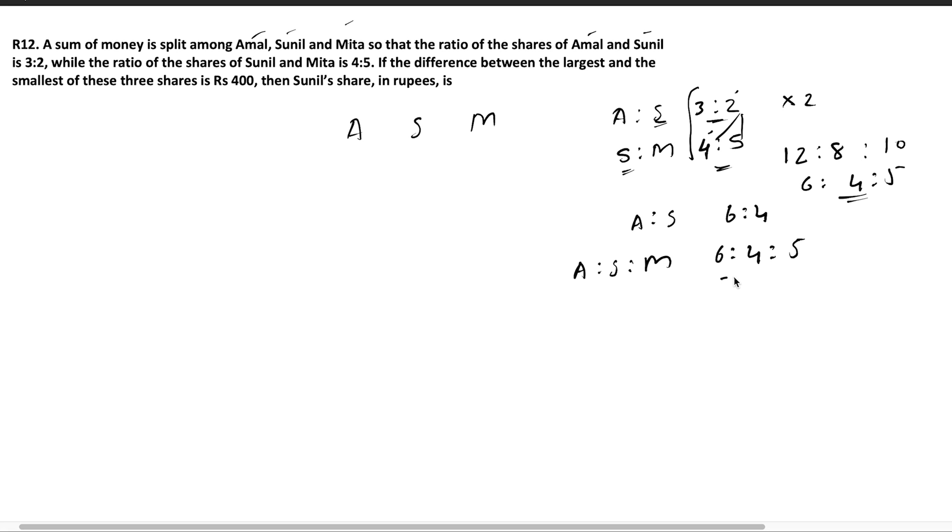So now you have got the ratio between A, S, M. Let's look at the rest of the question. If the difference between the largest and smallest of these three shares is Rs 400, then Sunil's share is. So let's take the sum of money received by A as 6x, S as 4x, M as 5x. So obviously the largest part is 6x and the smallest part is 4x. So 6x minus 4x is equal to 400. As given in the question, difference between the largest and smallest of these three shares is 400. So 2x is equal to 400 and x is equal to 200. The question is to find out Sunil's share, which is 4x, 4 into 200, you will get it as 800.